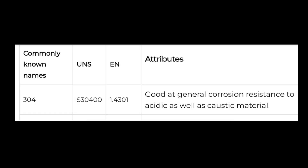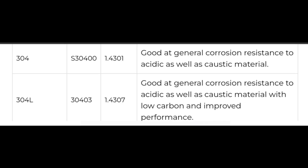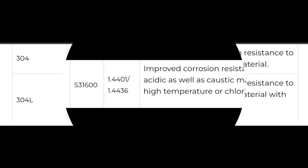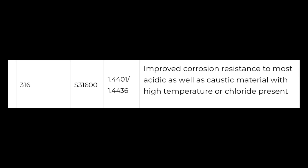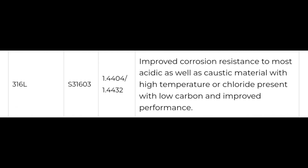Some commonly known attributes of SS304: good general corrosion resistance to acidic as well as caustic material. Attributes for SS304L: good general corrosion resistance to acidic as well as caustic material, with low carbon and improved performance. SS316 attributes: improved corrosion resistance to most acidic as well as caustic material, with high temperature or chloride present environments, low carbon, and improved performance.